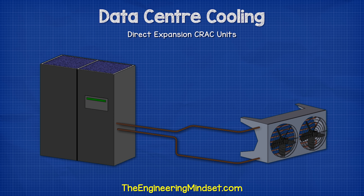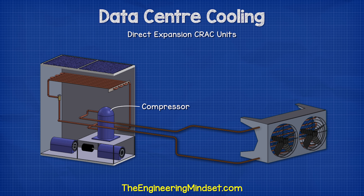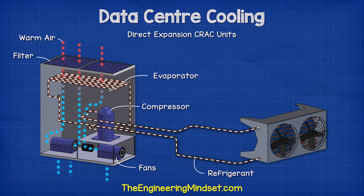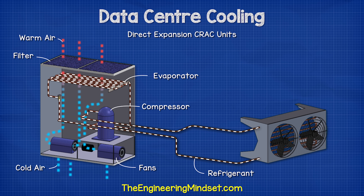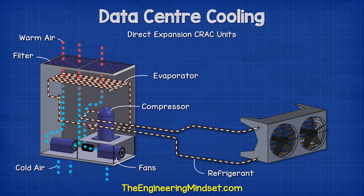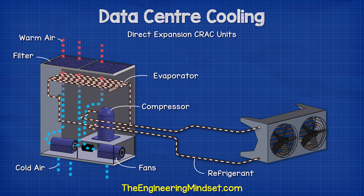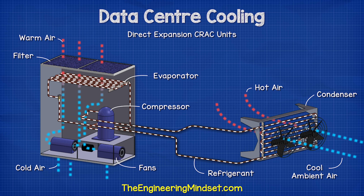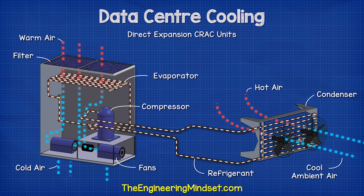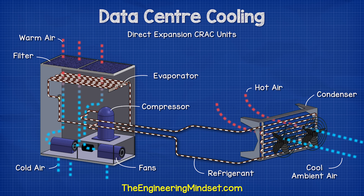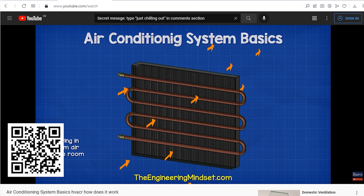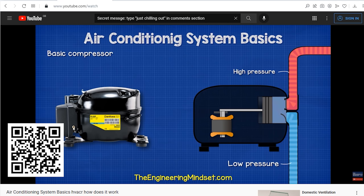Smaller data centers will often use direct expansion units where an internal compressor pushes refrigerant around the system. A fan moves the hot air over a heat exchanger known as the evaporator. The refrigerant flowing inside the evaporator absorbs this heat, so the air leaves cooler and is pushed into the void under the floor. The refrigerant flows to the condenser unit located outside, where a fan blows air over the pipes to remove the heat from the system. The refrigerant then returns to collect more thermal energy. We have covered the basics of refrigeration systems in detail previously — I'll leave a link in the video description down below.